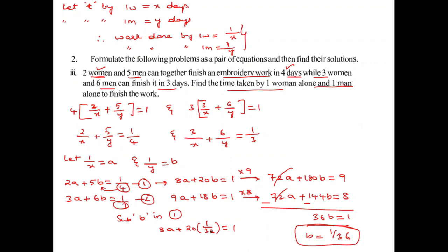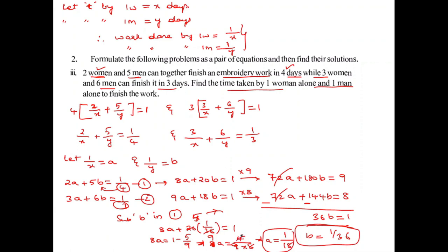Substituting B equals 1 by 36 into equation 3: 8A plus 20 by 36 equals 1. Simplifying: 8A plus 5 by 9 equals 1. Shifting: 8A equals 1 minus 5 by 9 equals 4 by 9. So A equals 4 by 9 divided by 8, giving A equals 1 by 18.